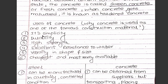Why is concrete used as one of the most famous construction materials? Its simplicity — it is very simple to use. Durability, high strength, excellent resistance to water, variety of shapes and sizes, and it is the cheapest and most readily available material.